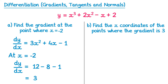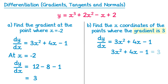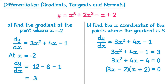For part b, we're asked to find the x coordinate of the point where the gradient is 3 — the reverse problem. We set dy by dx equal to 3: 3x squared plus 4x minus 1 equals 3. Taking 3 from both sides gives 3x squared plus 4x minus 4 equals 0. This factorises to (3x minus 2)(x plus 2) equals 0, giving x equals two thirds and x equals negative 2. So there are two points on the curve where the gradient equals 3.